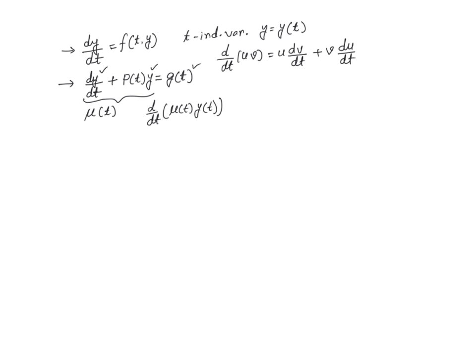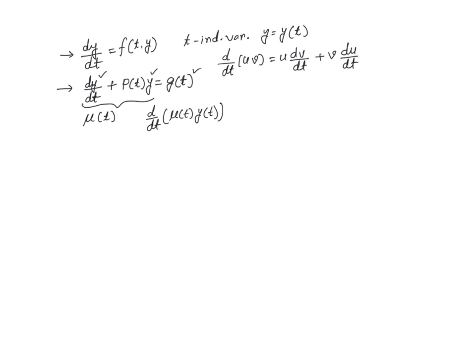We are making an assumption here and then trying to come up with a solution. So if we multiply both sides by μ(t), and by using the product rule for derivatives, we write out the result.